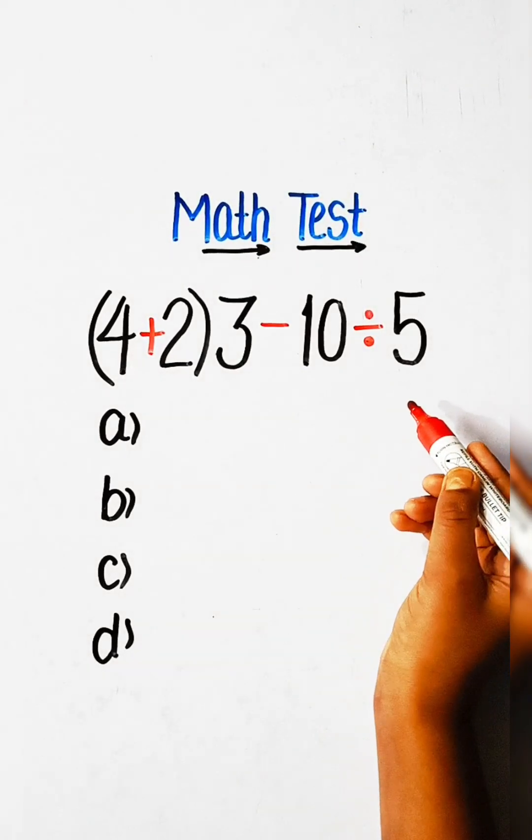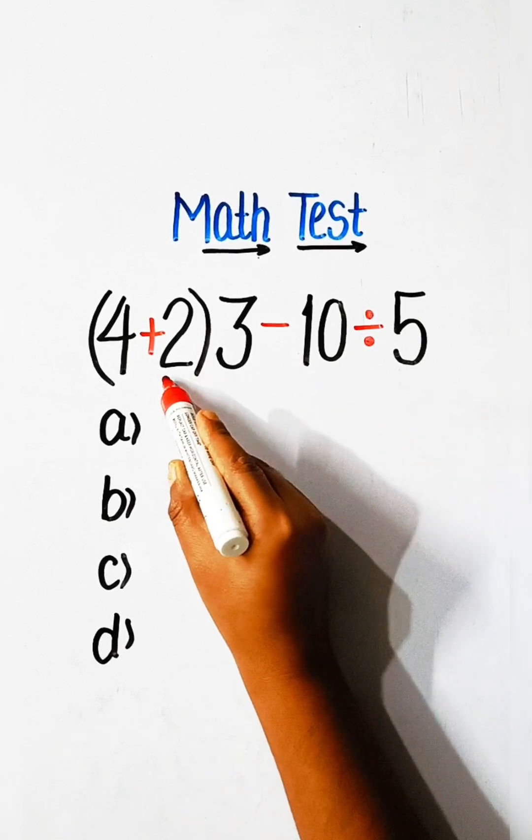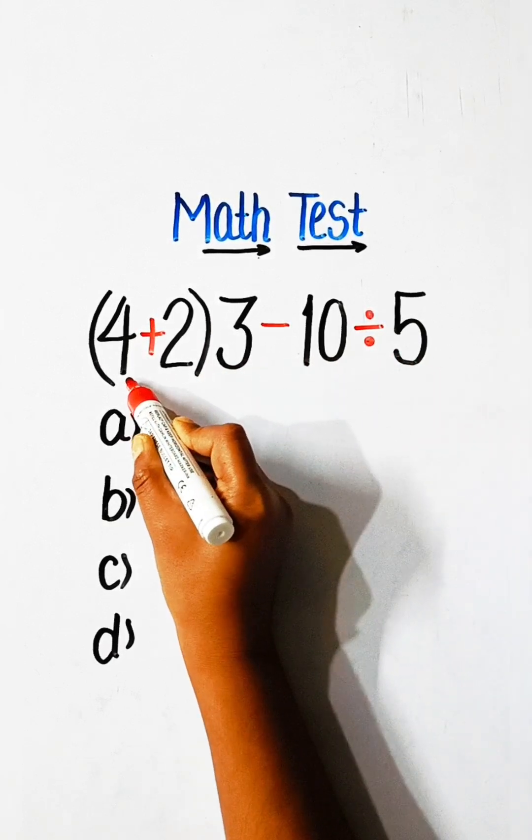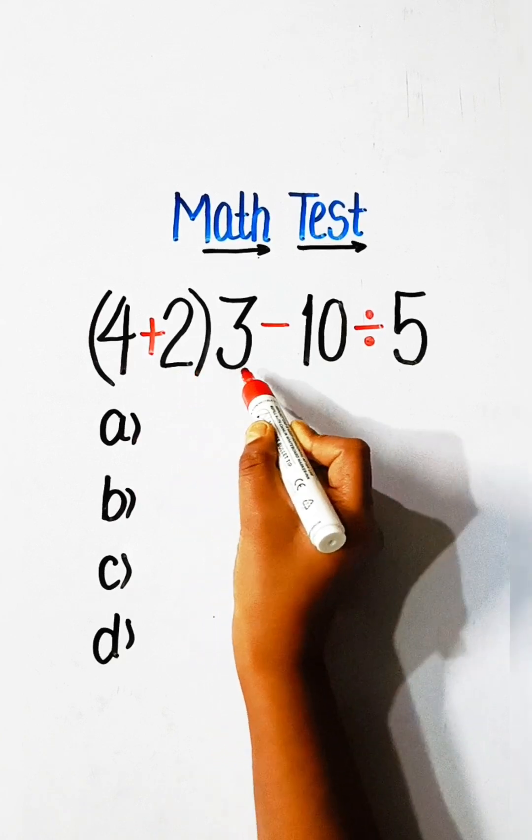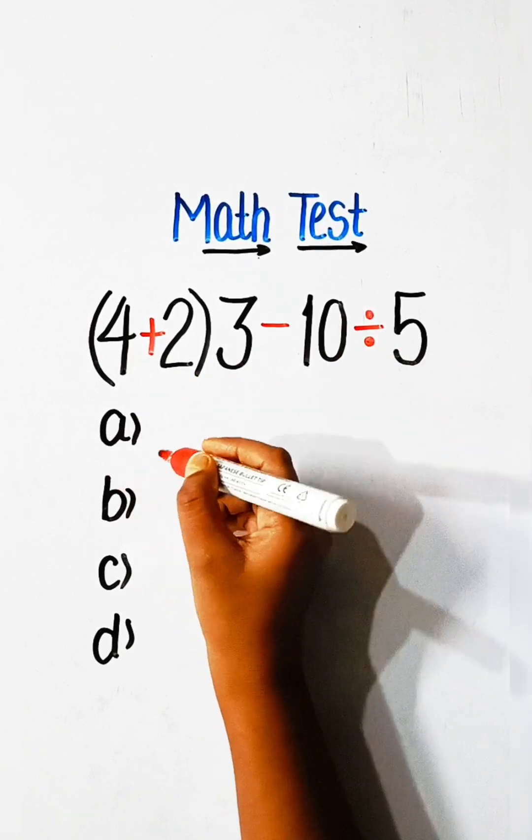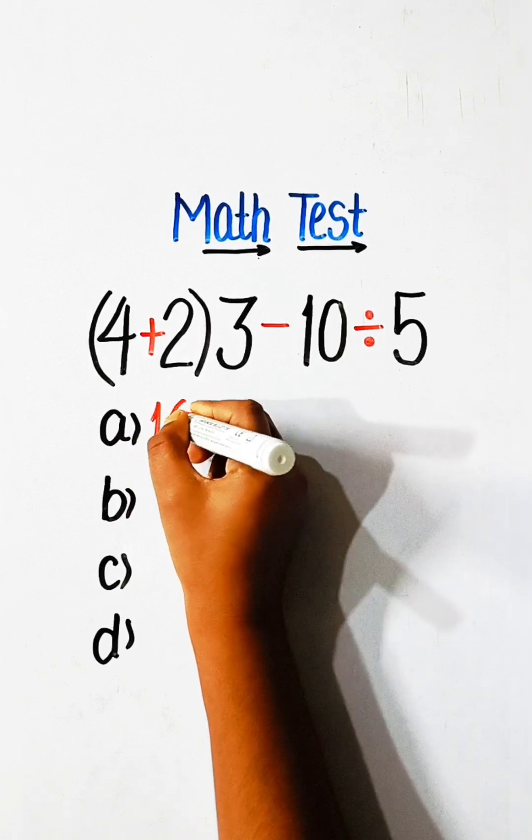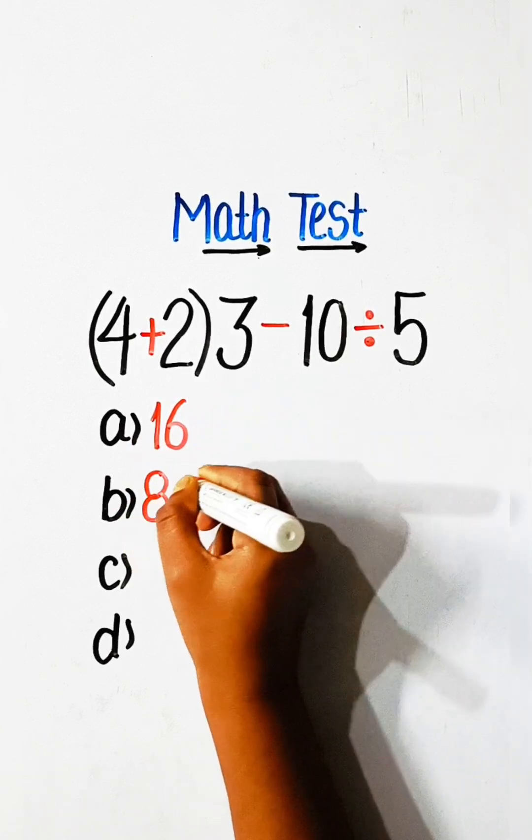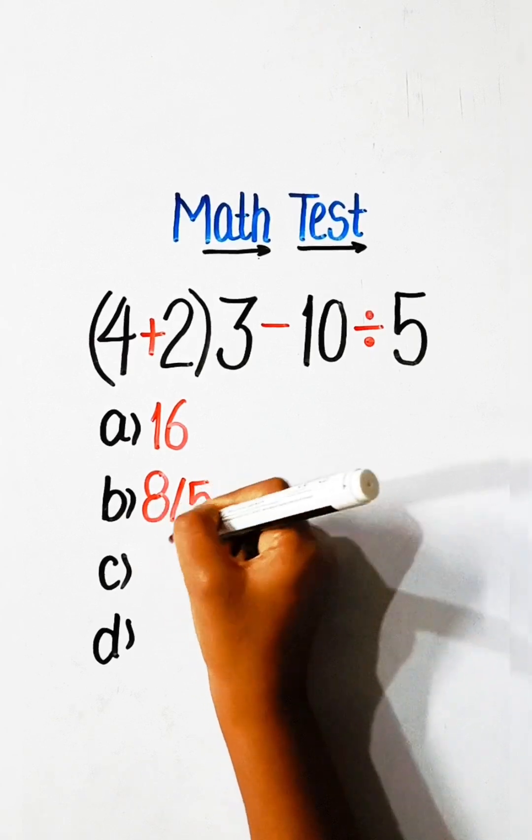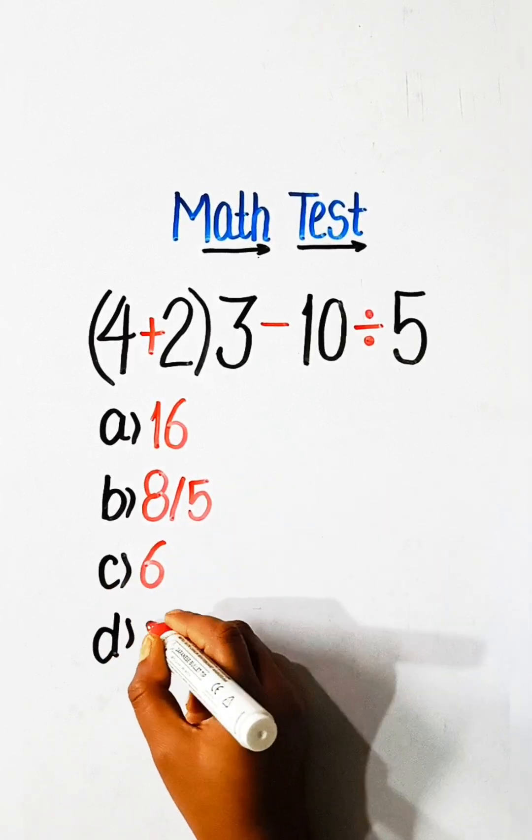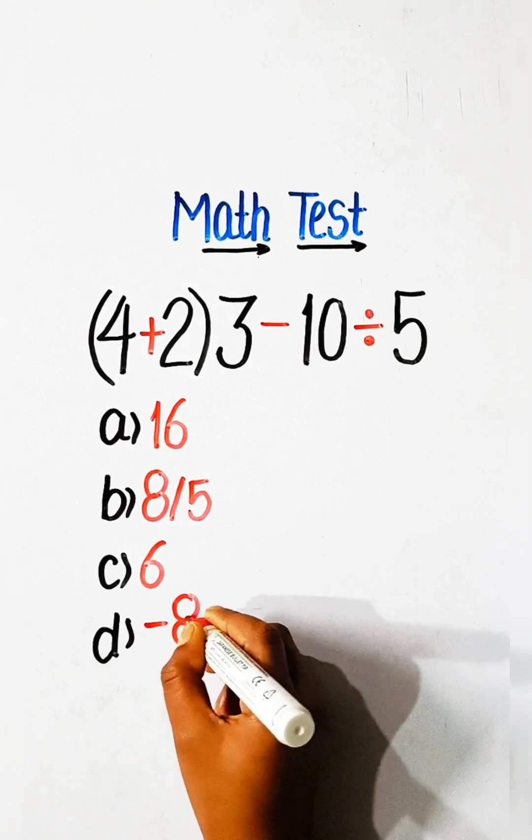Hello friends, let's solve another math expression: (4 + 2) × 3 - 10 ÷ 5 equals what? Option A: 16, Option B: 8/5, Option C: 6, Option D: -8/5.